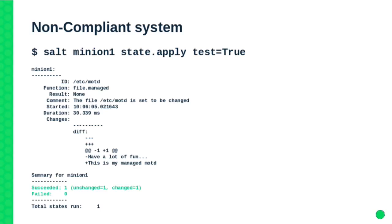Let's imagine we have a system called Minion1 where we have a standard /etc/motd file and some package, and we apply this configuration. If the /etc/motd file was touched by someone and modified, what will Salt do? It will just override it — it will correct the state. But Salt allows you to test the configuration first, and Salt will tell you: I haven't changed anything, but this state for /etc/motd, if I apply the configuration for real, it will be changed. And it will show you the diffs. This is the first step towards finding out which server is deviating from its configuration.